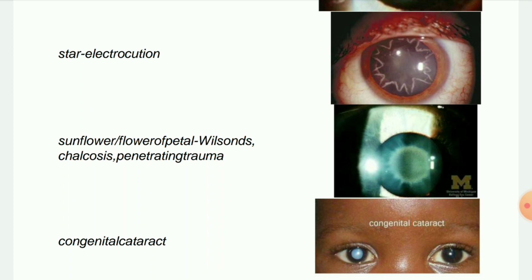Next image: Congenital cataract. Congenital cataract refers to a lens opacity which is present at birth. It covers a broad spectrum of severity — whereas some lens opacities do not progress and are not visually significant, others can produce profound visual impairment. Congenital cataracts may be unilateral or bilateral.